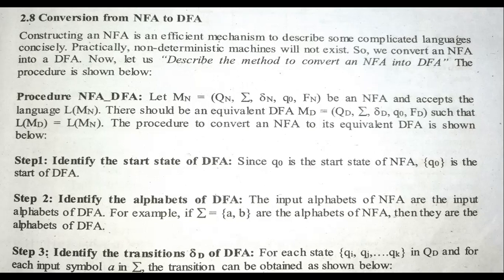We are left with three remaining components: transition function, final state, and number of states. For the transition of DFA, we name it delta subscript D, and delta subscript N represents the transition of NFA. We'll see how to identify the transition of DFA for each state qi through qk in QD, and for each input symbol a in sigma.